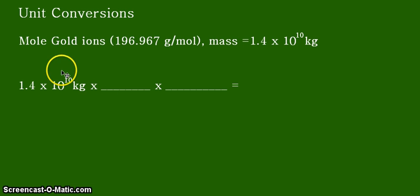Alright, so obviously we are given the unit kilograms. So we have to convert that unit into grams first so that we can multiply that with the molar mass for us to get the number of moles of our gold ions.